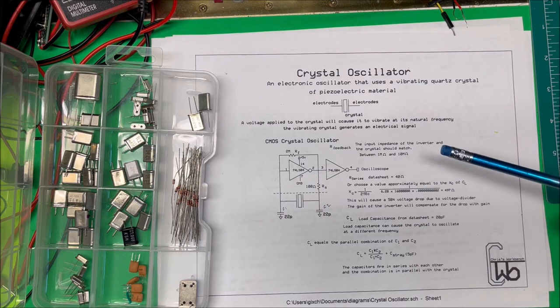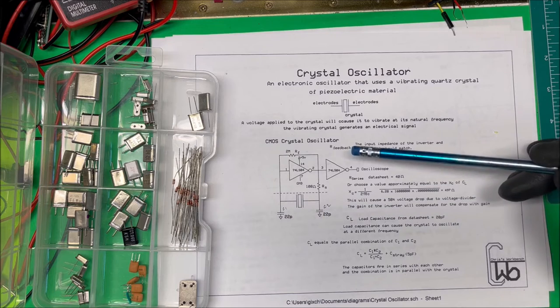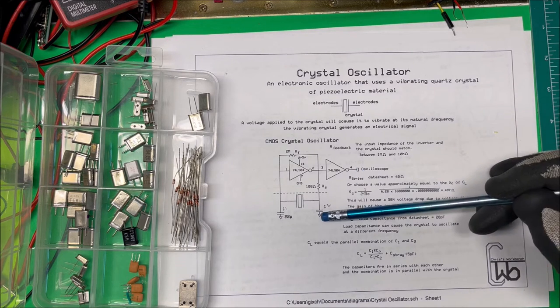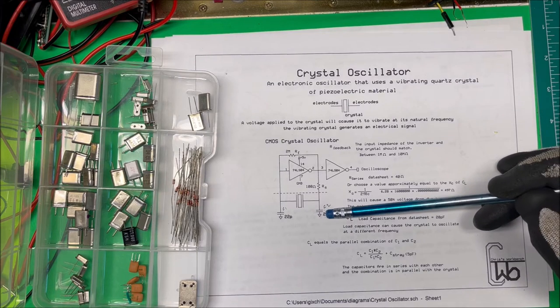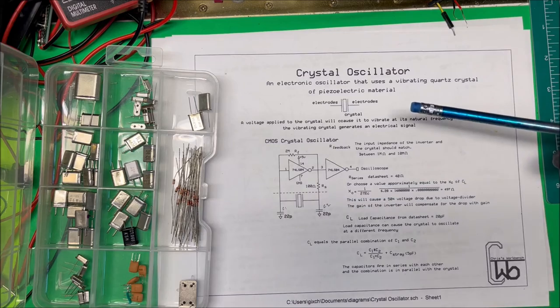So that's what we're going with, and then we're going to put this on the scope and see what frequency we get. Then I'm going to add another 22 picofarads over here to change the frequency and see how much it changes it by.